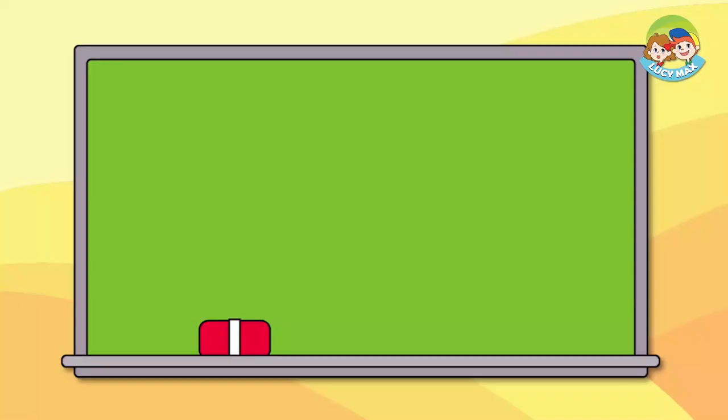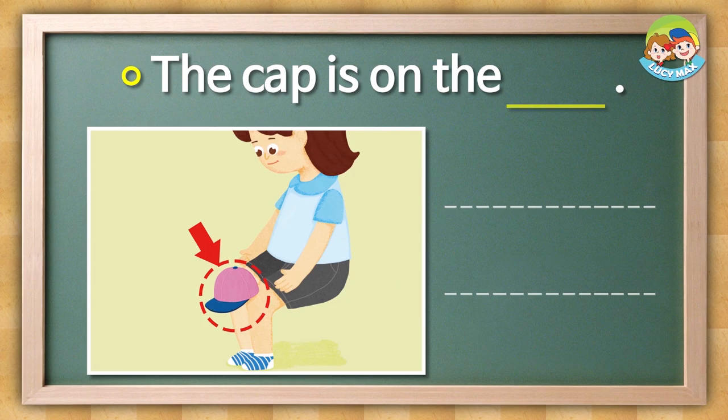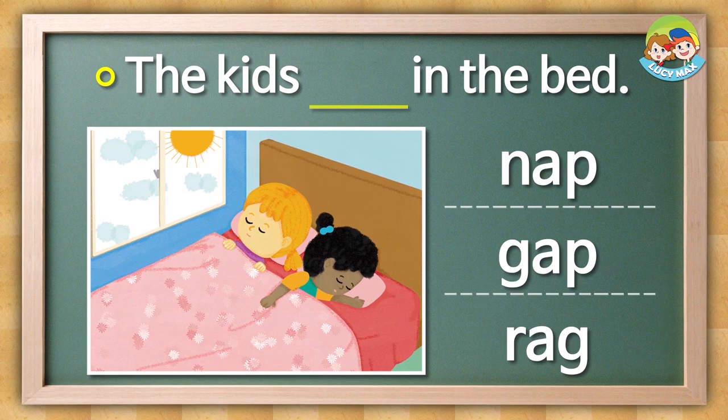It's time for a test again — find the right word for the blanks. Look at the picture and choose the word. Are you ready? The cap is on the blank — is it bag, map, or lap? The answer is this. The kid's blank in the bed — is it nap, gap, or rag?